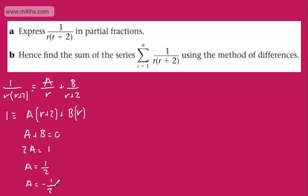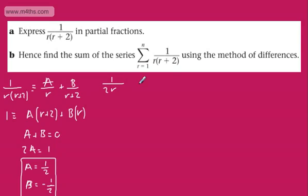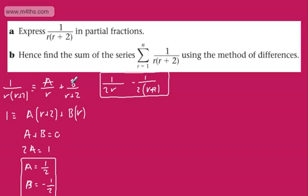If you're doing a partial fractions question alone, I suggest being a little more explicit in what you're doing. But as we're just asked to express it in partial fractions, we'd be awarded one or two marks. So we can now write this as 1 over 2r minus 1 over 2(r+2). A was 1/2 and B was minus 1/2.